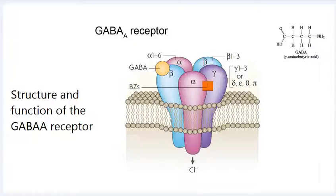Structure and function of the GABAA receptor. The GABAA receptor is an ionotropic receptor and ligand-gated ion channel. Its endogenous ligand is gamma-aminobutyric acid, GABA, the major inhibitory neurotransmitter in the central nervous system.